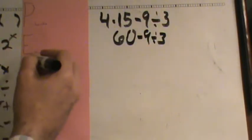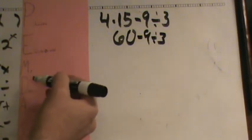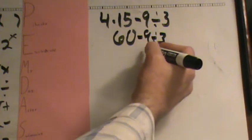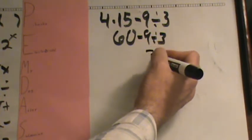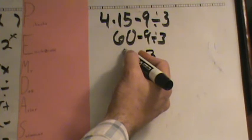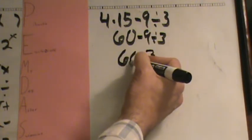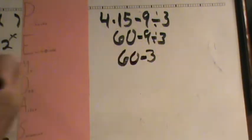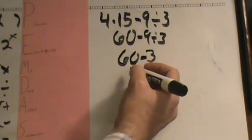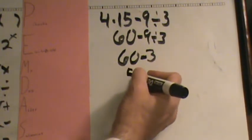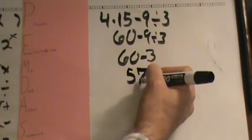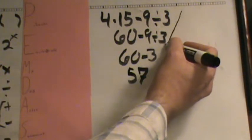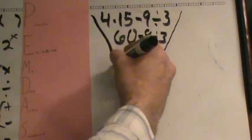And then I'm going to go back and say, alright, I was on my multiplication division stage. Is there multiplication division left? There is. So I have 9 divided by 3 is 3, and I'm going to drop down everything I didn't use, which includes the 60 and the minus. And then finally, 60 minus 3 is 57. And I always recommend doing it in the way that comes out looking a little bit like an upside-down pyramid.